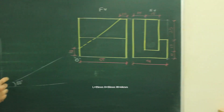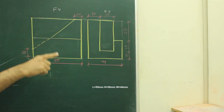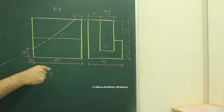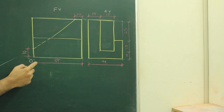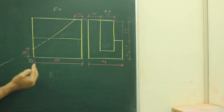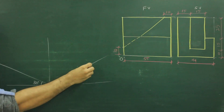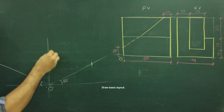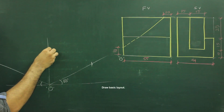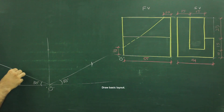In this arm, length is 55, height is 50 and width is 44. If you see, 55 is on the right hand side of O. So we will start with O over here. We will take 55 this side, height 50 and width 44.